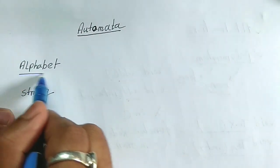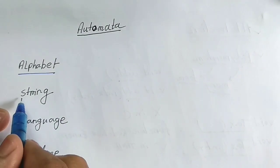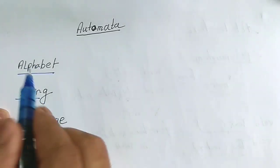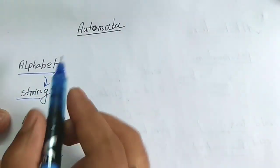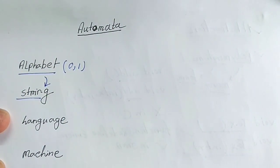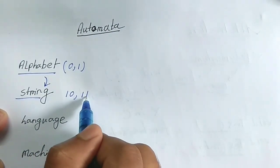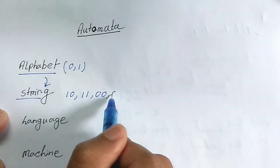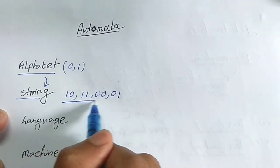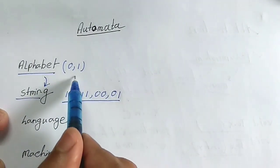The first term is alphabet. Alphabet is what we think about when generating a string — a string is generated from the alphabet. So, if the alphabet is 0 or 1, there are 2 alphabets. From this alphabet, we can make strings like 10, 11, 00, and 01. These are the strings built from this alphabet.